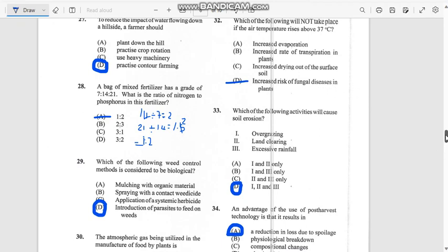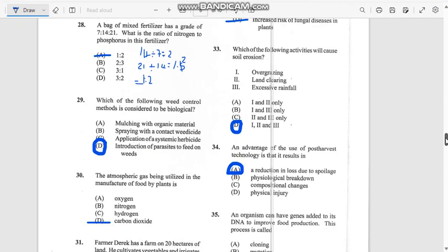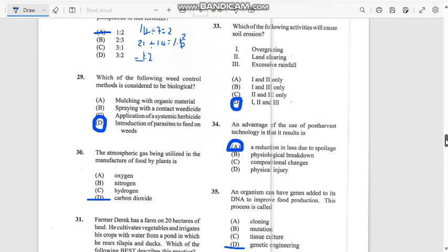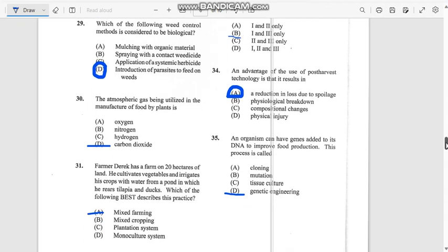Number 33: Which of the following activities will cause soil erosion? Overgrazing, land clearing, and excessive rainfall. This is wrong - it would not be land clearing. If you're clearing land, that won't cause it. It's overgrazing and excessive rainfall. The answer would be one and three, guys.